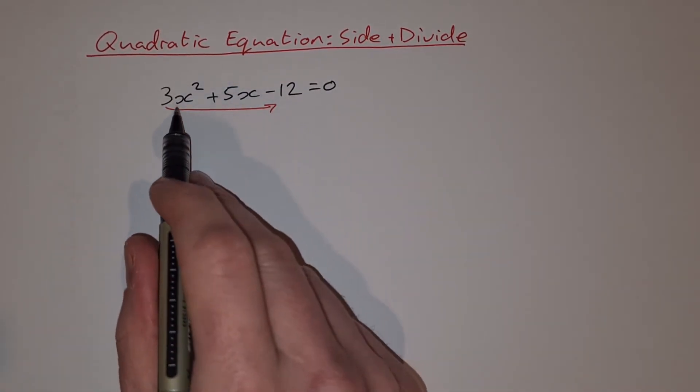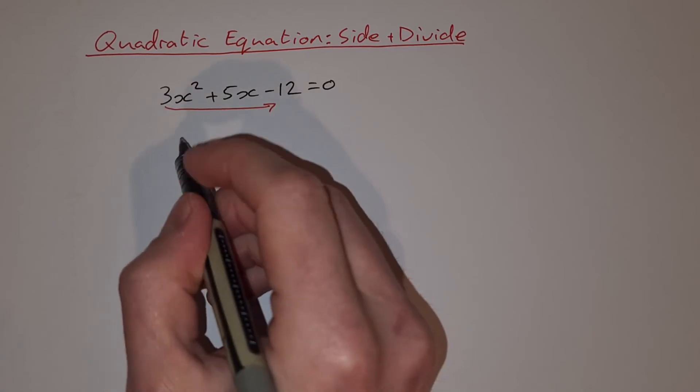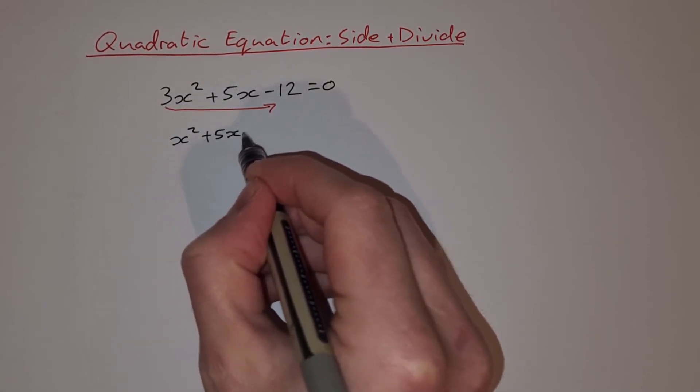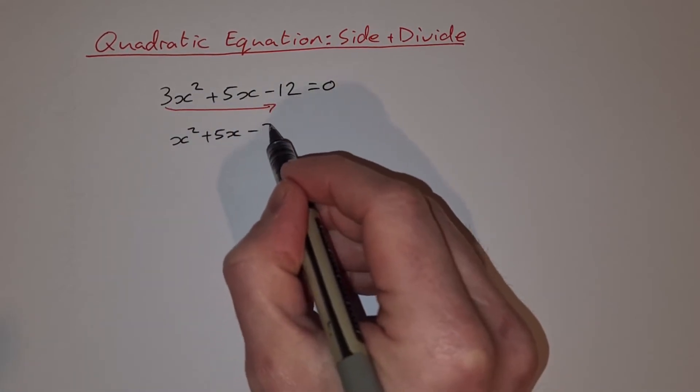And we're going to rewrite the equation without this 3 now, so just with an x squared plus 5x. And then we're going to multiply the 3 by the minus 12 to get minus 36.